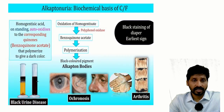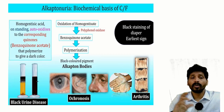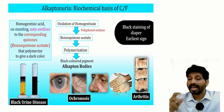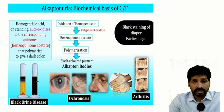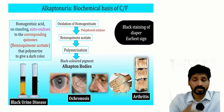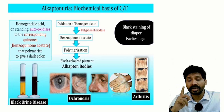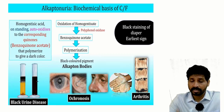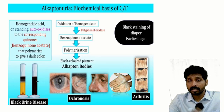Homogentisic acid on standing auto-oxidizes to the corresponding quinone, benzoquinone acetate, which polymerizes to give a dark color. That is why alkaptonuria is otherwise known as black urine disease. Oxidation of homogentisate to benzoquinone acetate by polyphenol oxidase forms a polymerized black color pigment — alkapton bodies — which accumulate in soft tissues, giving the characteristic feature of ochronosis in the cornea, ear lobes, pinna, nose, hands, and spine. In infants, the earliest sign of alkaptonuria is black staining of diapers, as urine on standing converts the diaper to black stains.